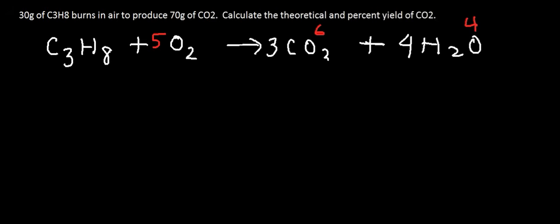Let's make a list of what we know. We have 30 grams of propane. It's burned in air, so we can assume an excess amount of oxygen. Whenever you have two reactants, you need to identify the limiting reactant and the excess reactant. You always want to use the limiting reactant to calculate your theoretical and percent yield, never the excess reactant.